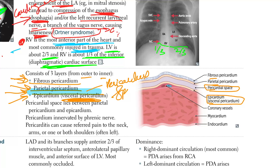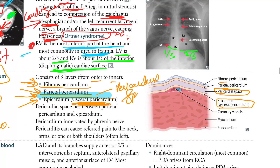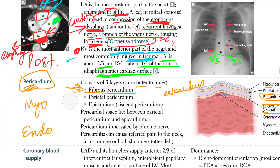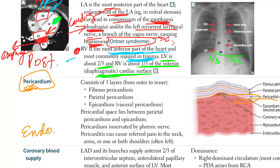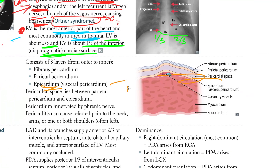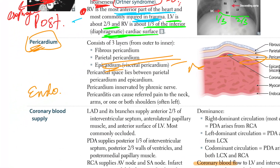The coronary vessels are within your epicardium. Epicardium contains the vessels — important thing. The coronary vessels are in the epicardium. The pericardial space lies between the parietal pericardium and the epicardium. In the epicardium we have the blood vessels, and here's the space.